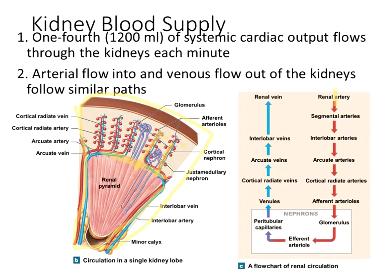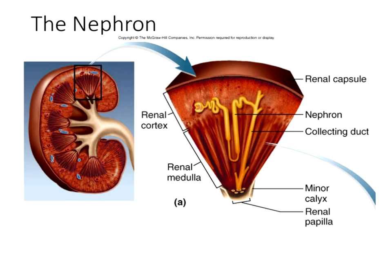The peritubular capillaries surround the tubules of the nephron. For nephrons that extend deep into the medulla, the peritubular capillaries are specifically called the vasa recta. The vasa recta are more specifically the capillaries in the medulla around the loops that extend deep and play a big role in helping retain water. As fluid returns toward venules, it is deoxygenated and has picked up reabsorbed nutrients, then collects into cortical radiate veins, arcuate veins, interlobar veins, and finally the renal vein into the inferior vena cava.